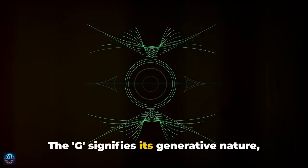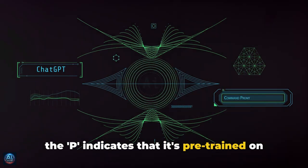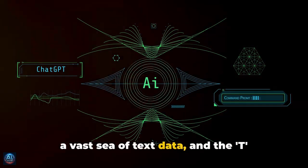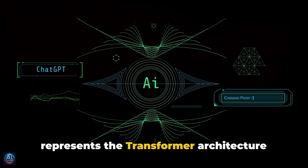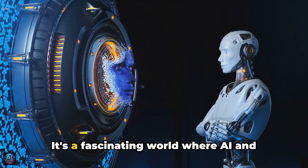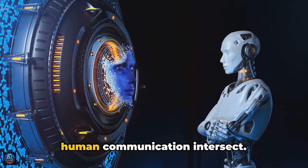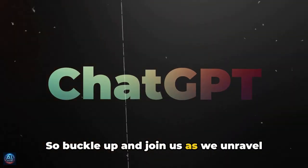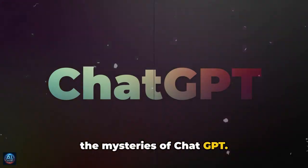The G signifies its generative nature, the P indicates that it's pre-trained on a vast sea of text data, and the T represents the transformer architecture that processes and generates the text. It's a fascinating world where AI and human communication intersect, so buckle up and join us as we unravel the mysteries of ChatGPT.